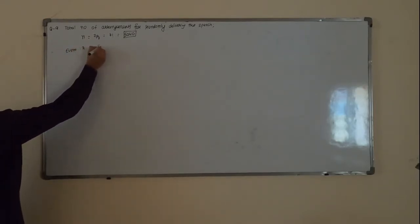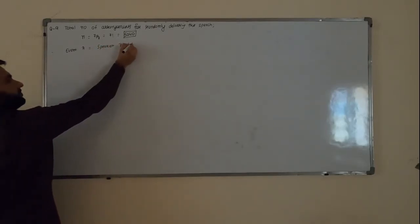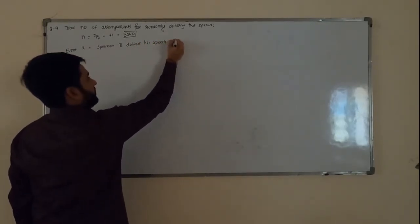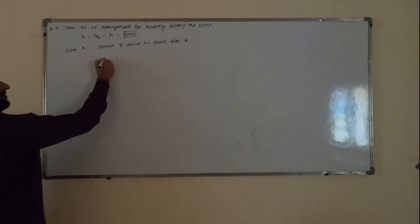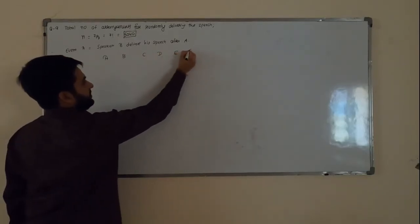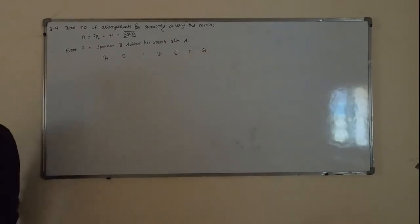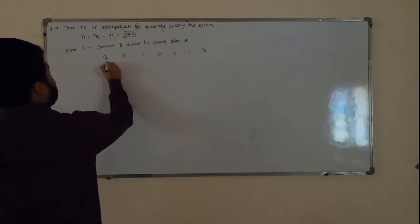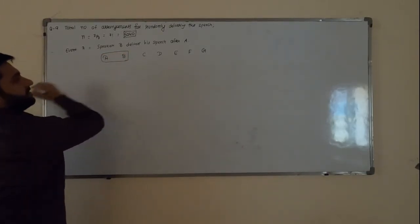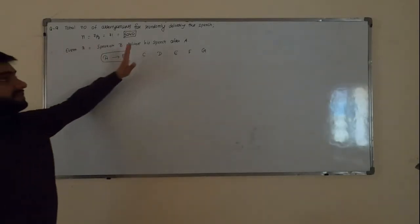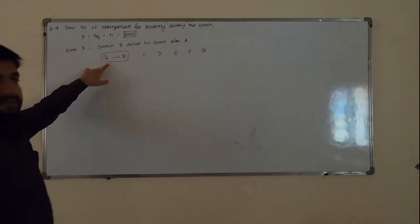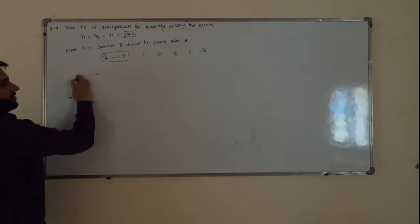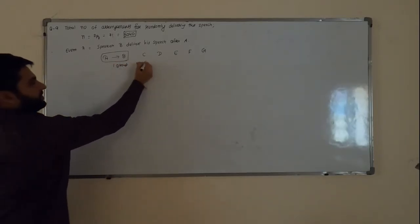Event A: speaker B delivers his speech after A. Write A, B, C, D, E, F, G. The condition is that B will deliver immediately after A, so A and B form one group, and none of the other people can come in between. That gives one group plus five different speakers, so six total elements. M = 6P6 × 1P1. Why 1P1 and not 2P2? Because the question specifies B after A only — not B before A. So there is only one internal arrangement. M = 6! × 1 = 720. P(A) = 720/5040 = 1/7.